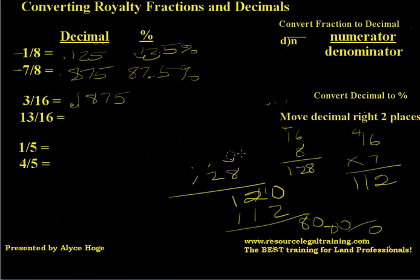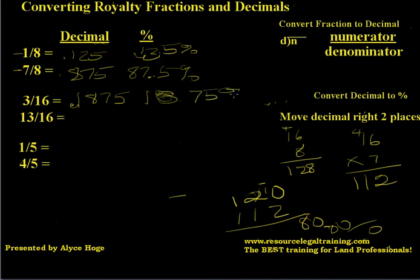And how are we going to get the percentage? We are going to move that decimal place over two places. So that decimal is going to be 18.75%.